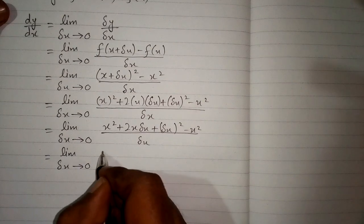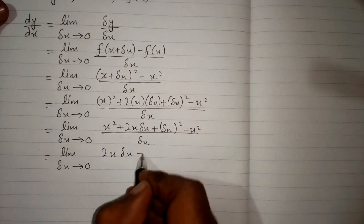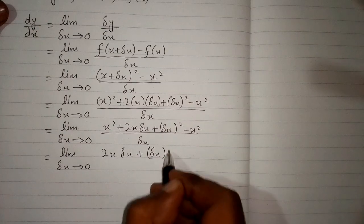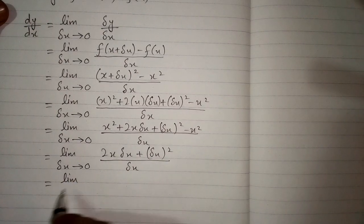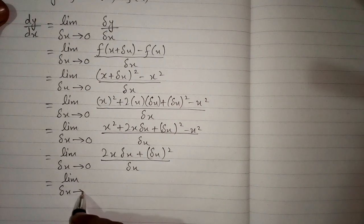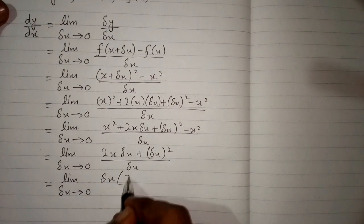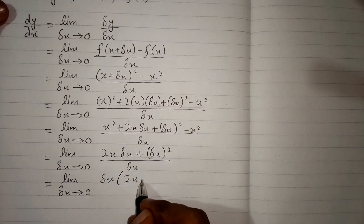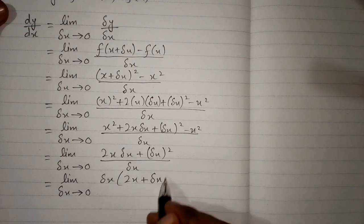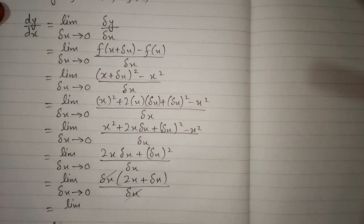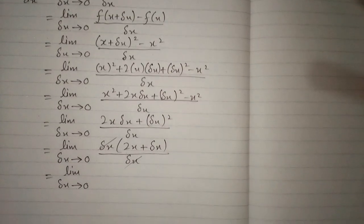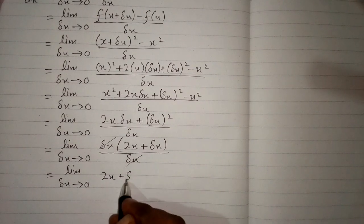So we have 2x times delta x plus delta x squared upon delta x. We can take delta x common, giving 2x plus delta x upon delta x. Then we cancel delta x, leaving limit delta x tends to 0 of 2x plus delta x.